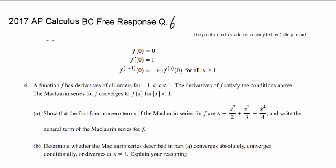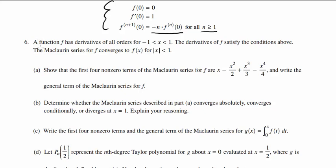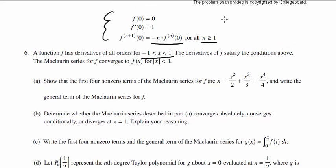Let's look at question number 6 for the 2017 AP Calculus BC free response. They began by giving us some valuable things: f of 0 is 0, f prime of 0 is 1, and the (n+1)th derivative of f at 0 equals negative n times the nth derivative evaluated at 0, for n greater than or equal to 1. A function f has derivatives of all orders for x between negative 1 and 1, the derivatives satisfy those conditions, and the Maclaurin series for f converges to f of x for |x| < 1.